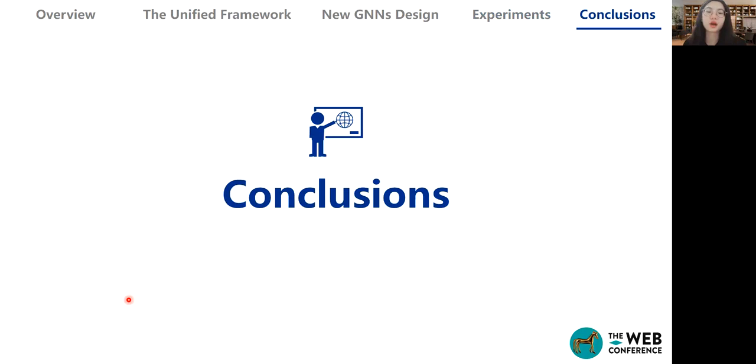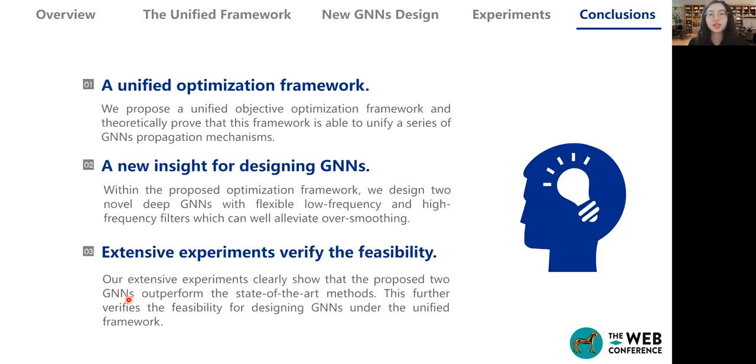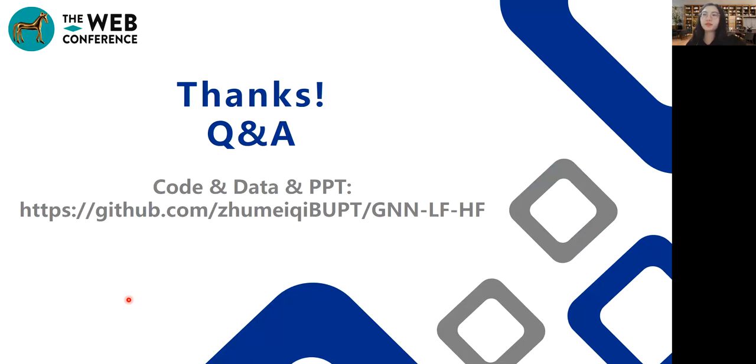Finally, we come to the conclusion. We establish the connection between different graph neural networks and a flexible objective optimization framework. This proposed unified framework provides a global view on understanding and designing different graph neural networks. We further propose two novel graph neural networks by designing the feature-fitting term. Extensive experiments also show that the performance of these two new graph neural networks demonstrates the feasibility of this framework. That's all for my work and thanks for listening. For other results, you can find them in these links. Thank you.